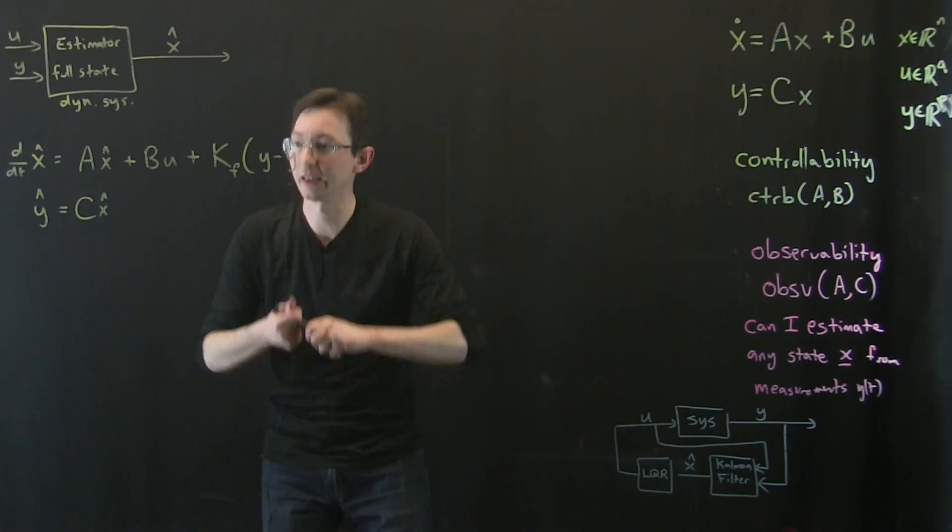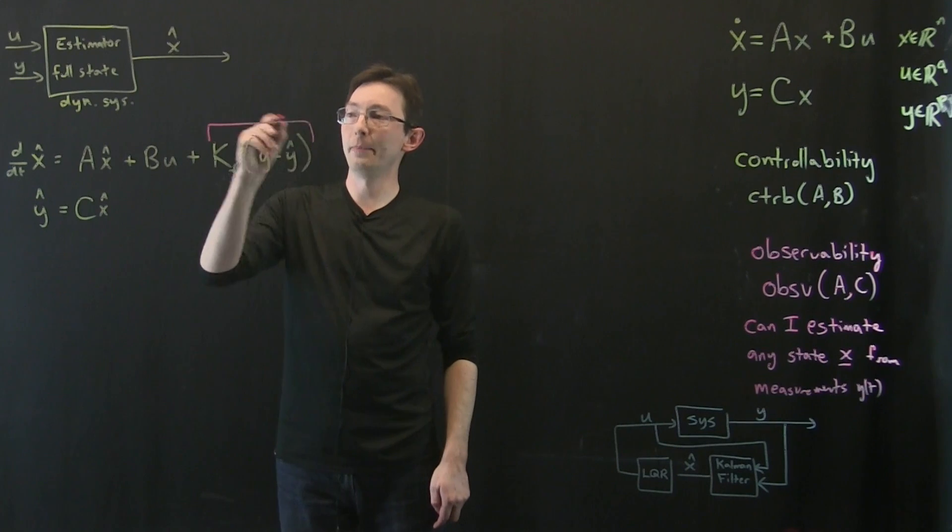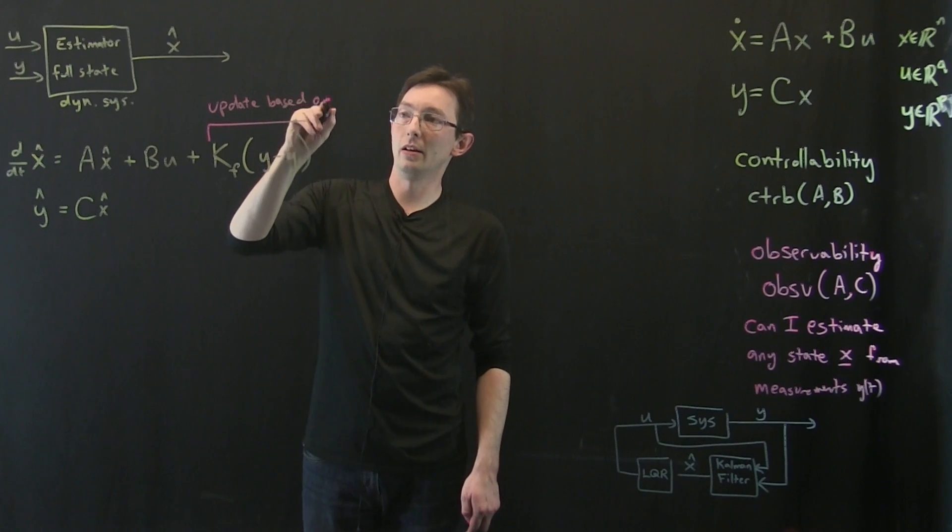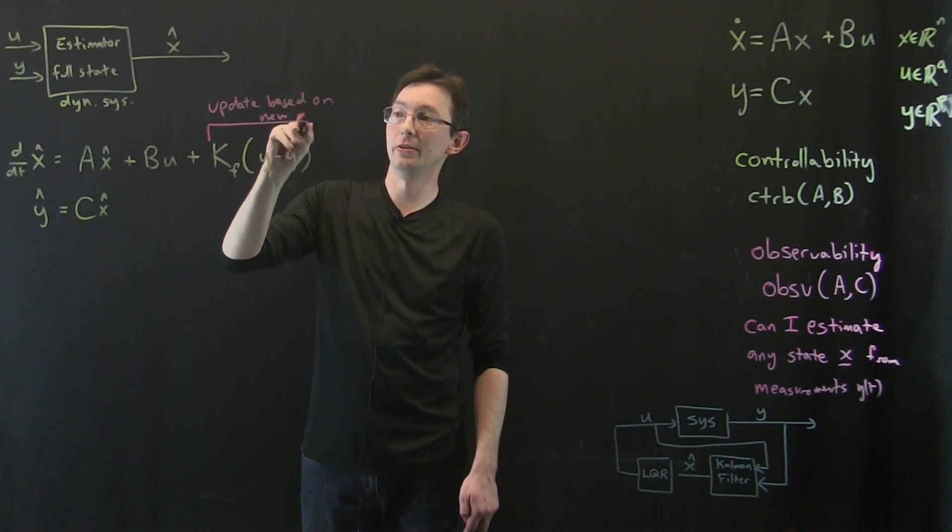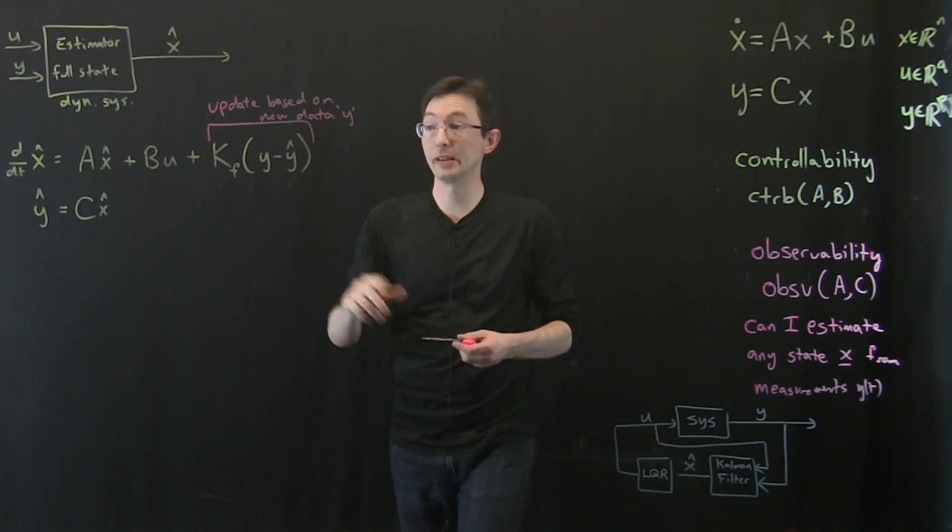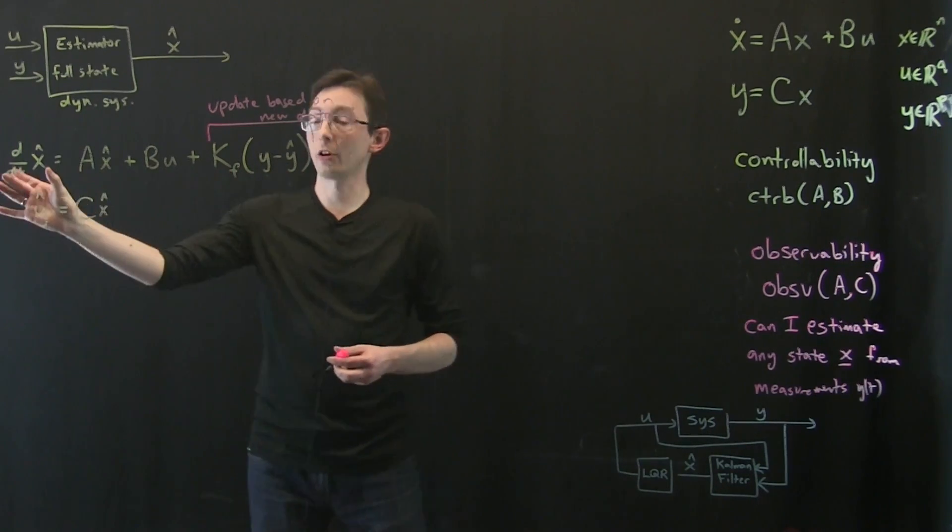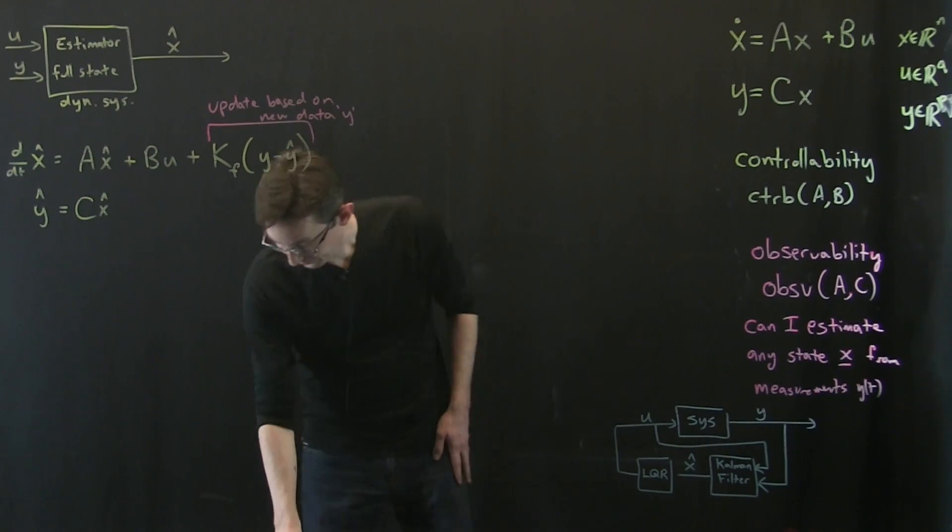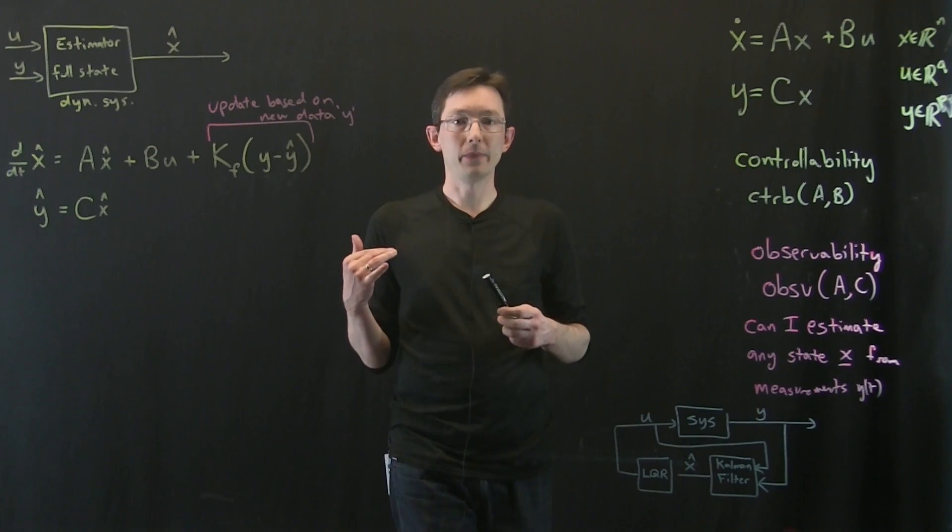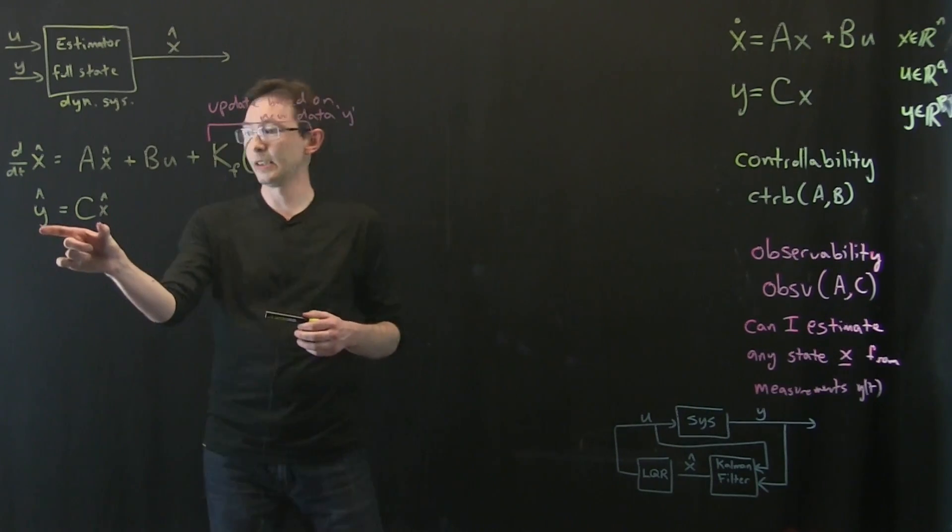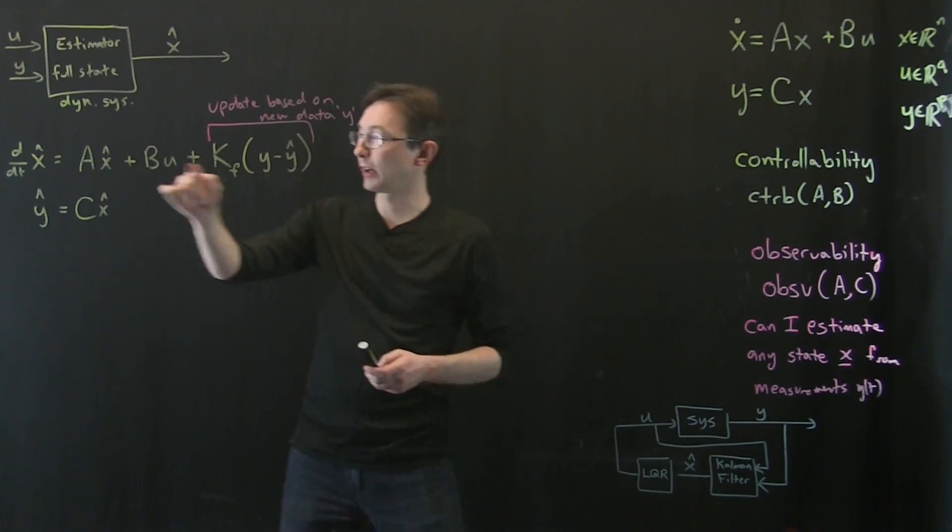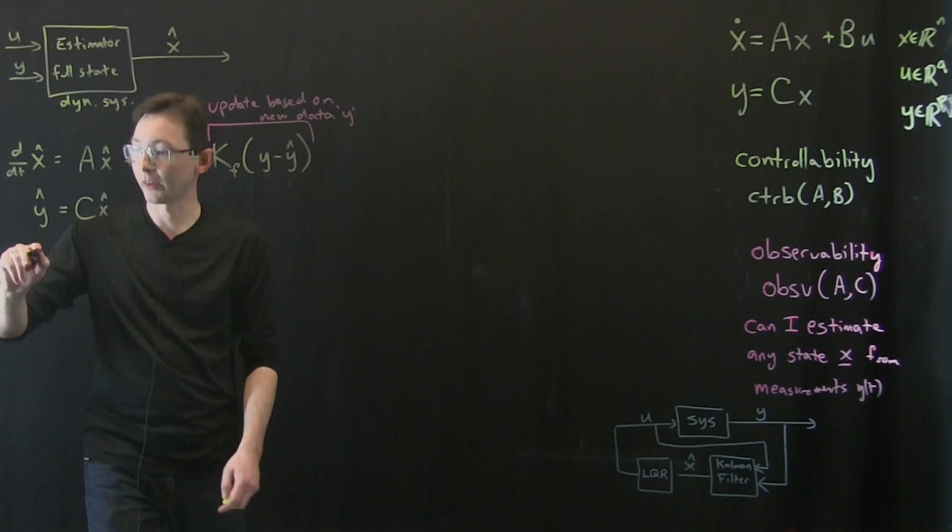Except every time I get a new measurement, I'm going to compare it to what I think that measurement should be. And then if I have a difference here, I'm going to correct my full state. So this is essentially an update based on new measurements, on new data Y. As I get new measurements in Y, this is going to correct my full state estimate of X hat. So I want to work this out a little bit more.